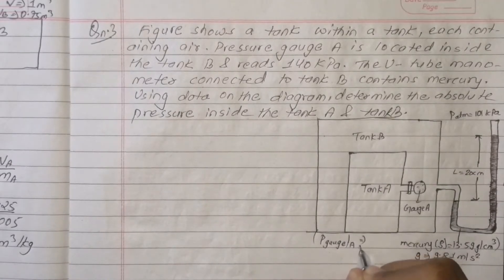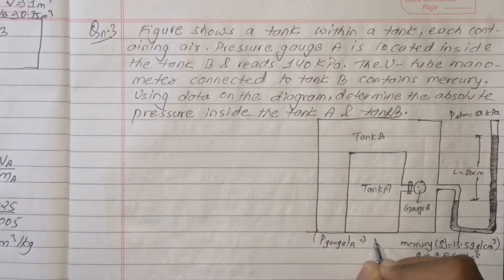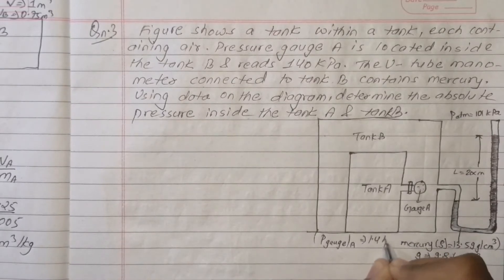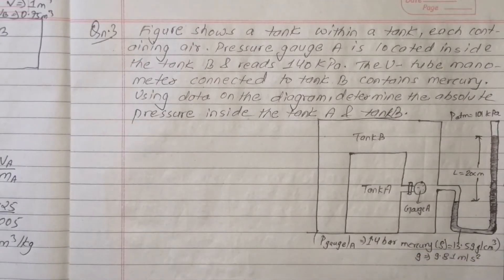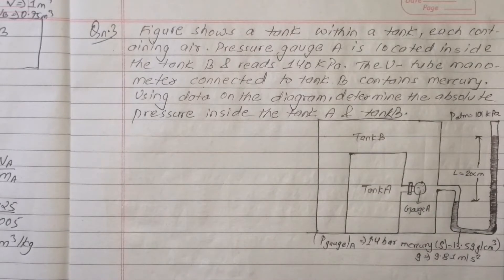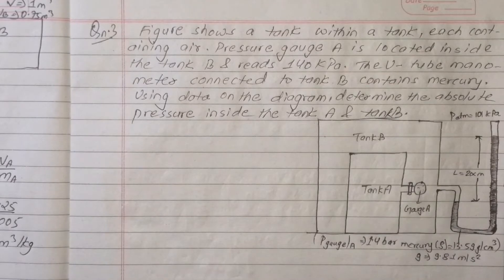A figure is given. The figure shows a tank that contains air. A pressure gauge of A is located inside the tank B. We have tank B with the pressure gauge.